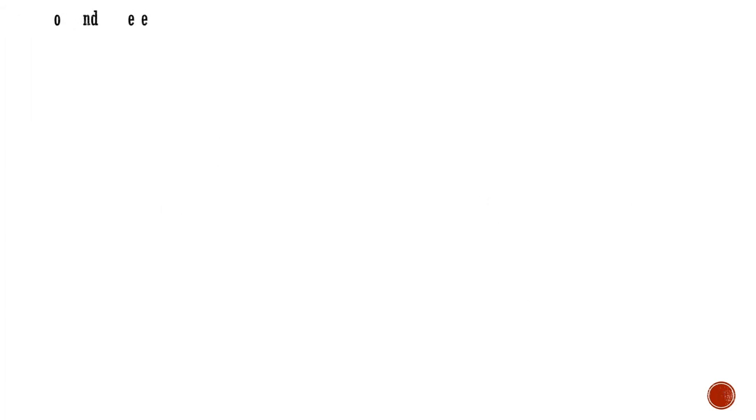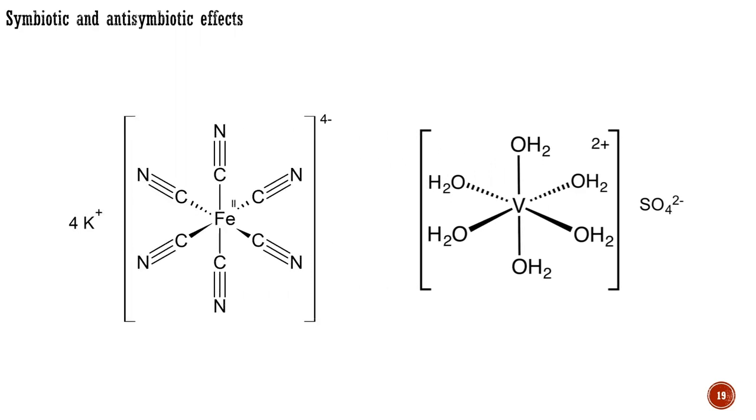A hard ligand tends to form ionic metal ligand bonds, where the ligand retains more negative charge compared to soft ligands. This allows the metal ion to retain more of its positive charge, thus attracting additional hard ligands. Good examples are the hexahydrate ions of first-row d-block metals. In contrast, binding soft ligands softens the metal, enabling it to bind other soft ligands, as seen in potassium ferrocyanide. This phenomenon is known as the symbiotic effect.